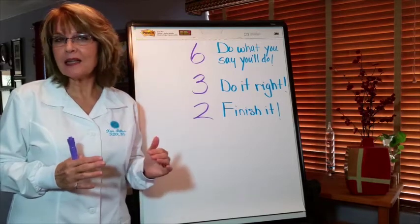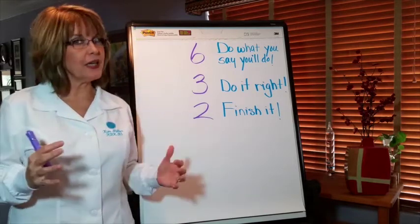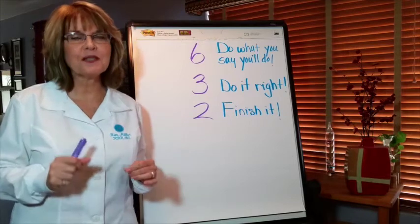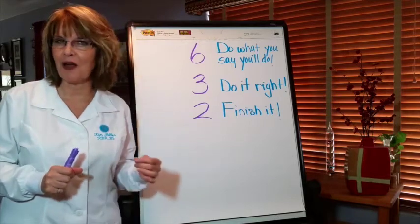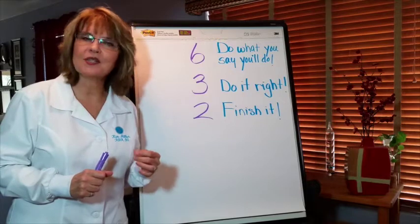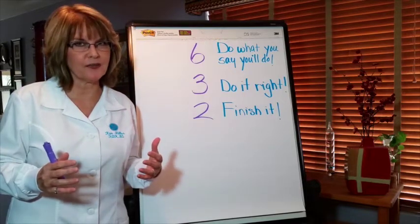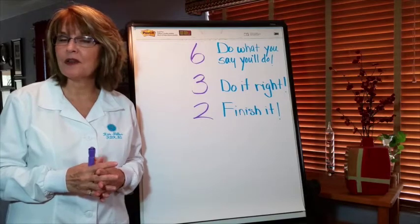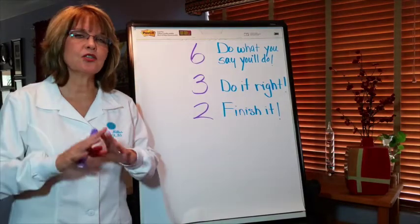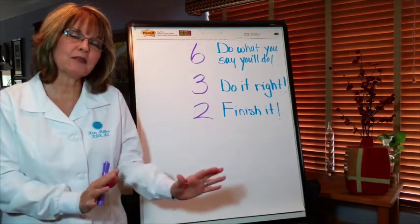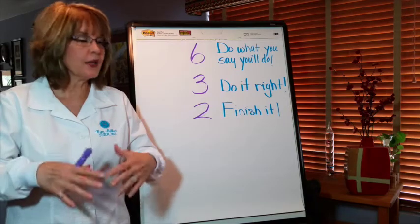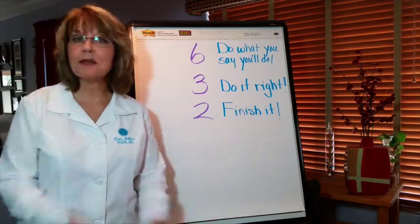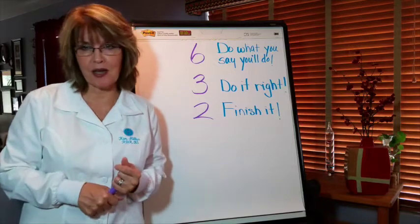A couple of guidelines here: don't agree to do something unless you're absolutely sure that you can complete it and follow through with it. Secondly, be honest with yourself and with others. Thirdly, if you find that you've overcommitted yourself, don't make excuses. Don't shift the blame to someone else. Own up to it, let the chips fall where they may, pick them up and move on as best you can.